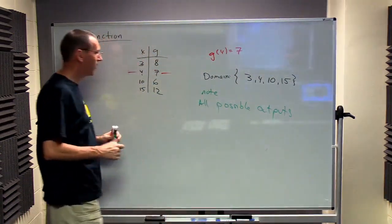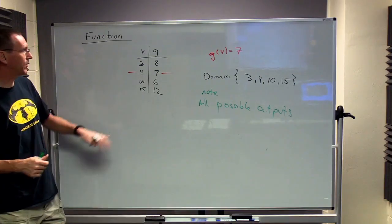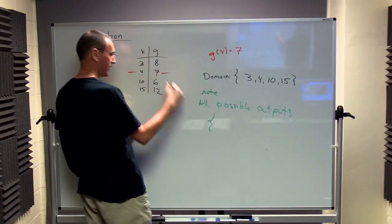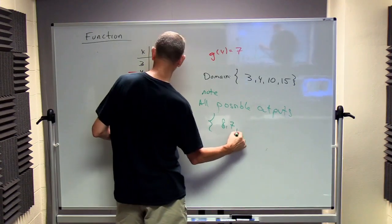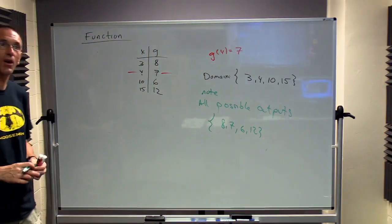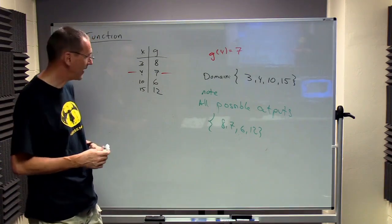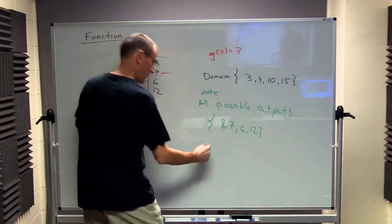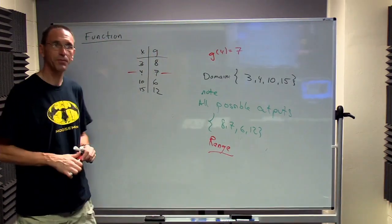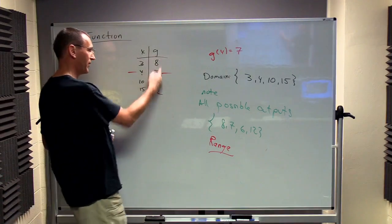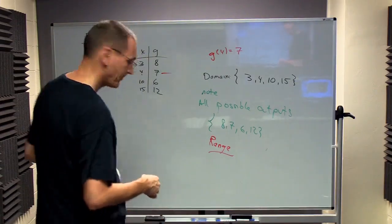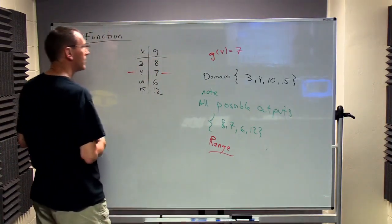In this case, I can tell you what all possible output values are. So all possible output values, or all the possible things I can get out of this would be 8, 7, 6, or 12. So all possible values that can come out of this, I can write like that. And we're going to give this a name. And we're going to call all possible outputs the range. Because we don't want these numbers to feel left out, because we've already talked about all possible inputs. All right.